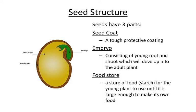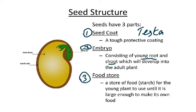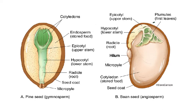Simplifying further, seeds have three parts. Number one is the seed coat, also called the testa. Number two is the embryo, consisting of a young root and shoot which will develop into the adult plant. Number three is the food store - mainly starch for the young plant to use until it is large enough to make its own food, or until its leaves develop so it can start to photosynthesize. The radicle becomes the root - R for radicle, R for root. The micropyle is also where water is absorbed during germination.